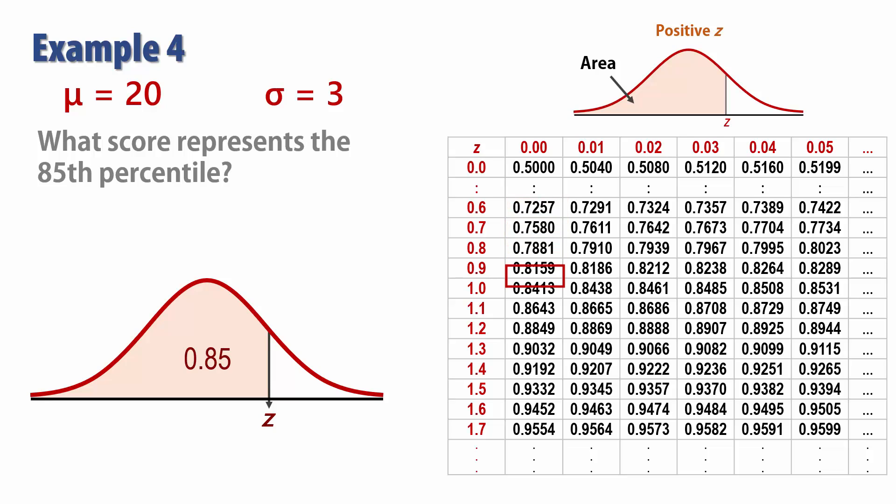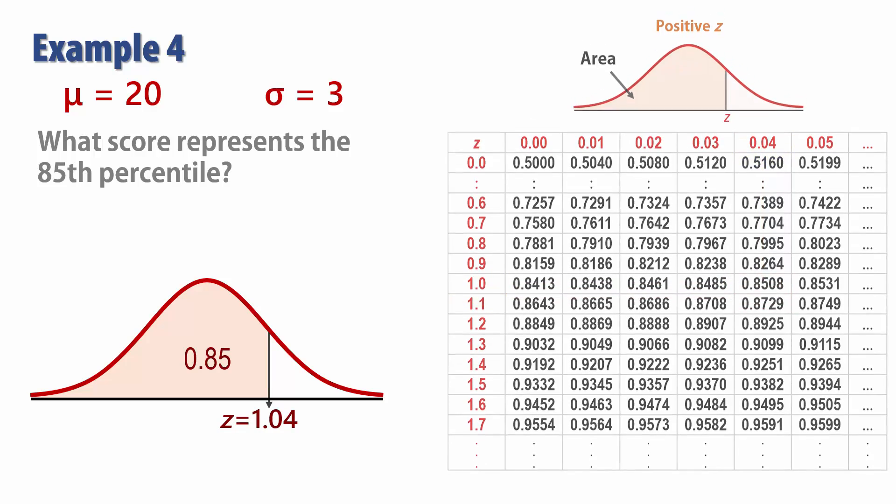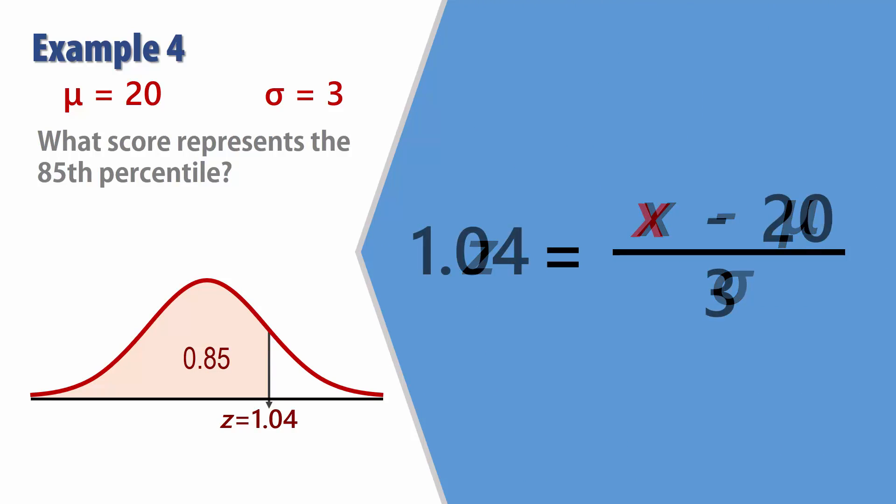Now during reverse lookup in the positive section of the Z tables, we see that the closest to 0.85 is 0.8508, and that corresponds to a Z score of 1.04.